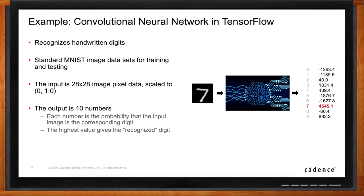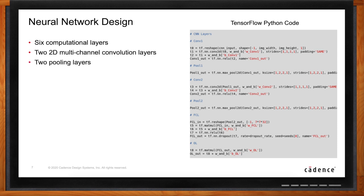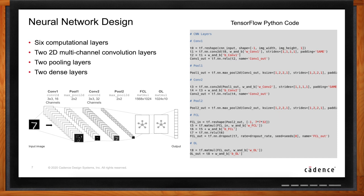What does the neural network look like? Here is the neural network itself — this is TensorFlow code that is part of the downloadable example. There are essentially six computational layers: two 2D multi-channel convolution layers, two max pooling layers, and two dense layers — also called fully connected layers. These layers start with the image as input and feed data through to the final layer, which outputs the 10 numbers. The network is trained using standard TensorFlow operations and the result is a set of weights and biases.